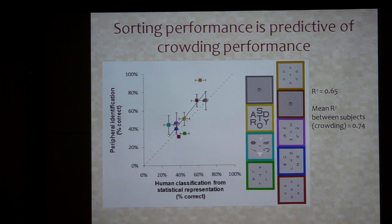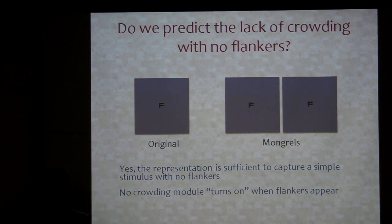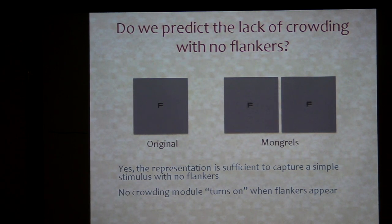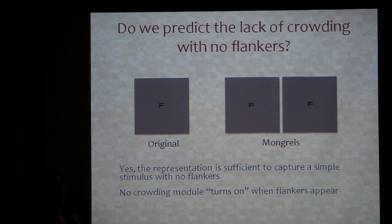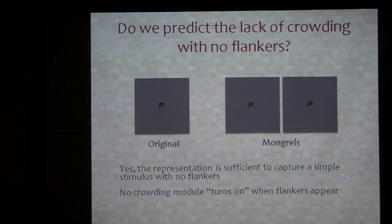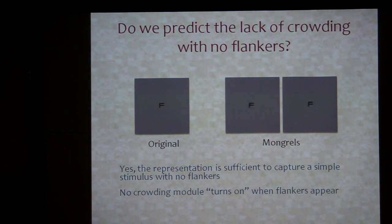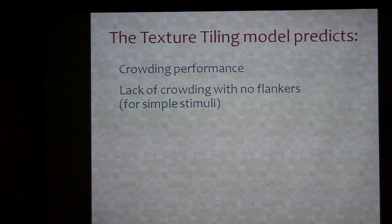That's some evidence that this might be what's going on. You might also ask, since we started with crowding being about flankers versus no flankers, can you predict the lack of crowding when you don't have flankers? Basically, yes. These are the mongrels for a simple isolated item — you predict that you can probably pretty easily recognize it. So you don't need some sort of crowding module that somehow turns on because there are flankers.